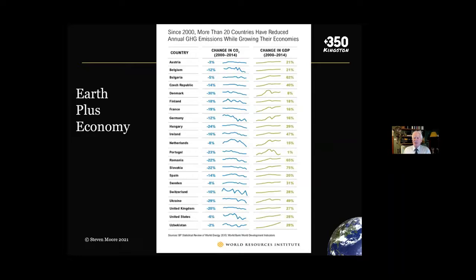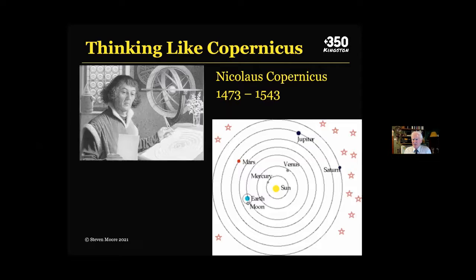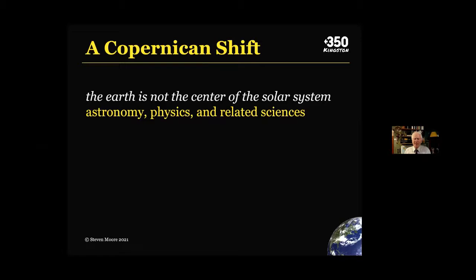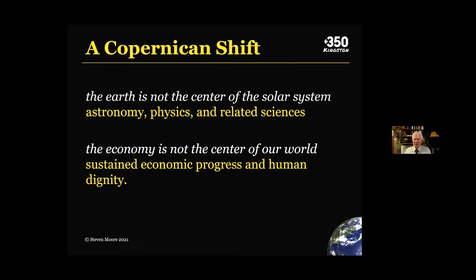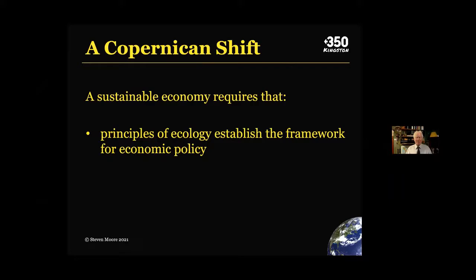I think we have to think like Copernicus. Nicholas Copernicus, about 4,000 years after Ptolemy, believed the sun was at the center of the solar system. That Copernican shift created a blossoming of astronomy, physics, and related sciences. I think if we shift our current idea and believe that the economy is not the center of our world, we will in fact have sustained economic progress and human dignity. This requires principles of ecology to establish the framework for economic policy, and economists and ecologists have to work together to fashion a new economy.